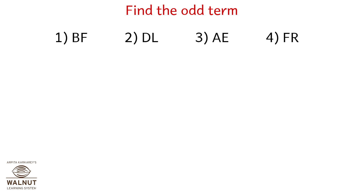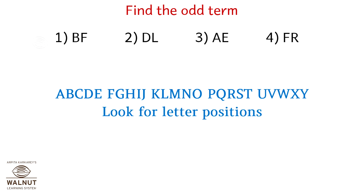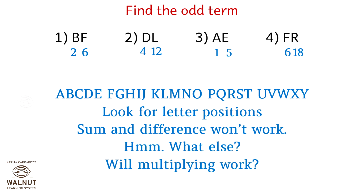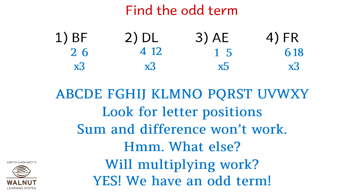Find the odd term again from the series below. Let's look for letter positions and write them down. Sum and differences are not working here. So let's try multiplication: 2 into 3 is 6, 4 into 3 is 12, 1 into 5 is 5, and 6 into 3 is 18. Yes, we have a winner again — option 3 is the odd one out.